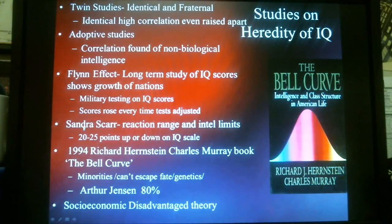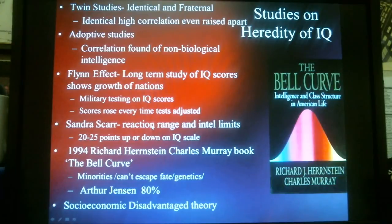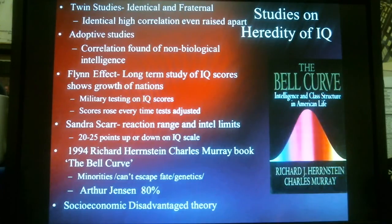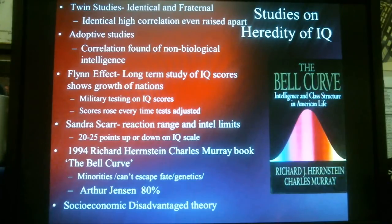Sandra Scarr is another psychologist whose name you want to make sure you get down. She wanted to look at the environmental role and how environment moves our intelligence. What she discovered is that we have what's called a reaction range when it comes to environment and intelligence. She argues there is a limit on how much environment can improve intelligence — about 20 to 25 points on an IQ scale. So if you have good schools, good parenting, and good nutrition, you can raise your IQ about 20 to 25 points above what your heredity gave you. Conversely, a poor environment with bad parenting, poor nutrition, and poor schools could lower your IQ by 20 to 25 points.